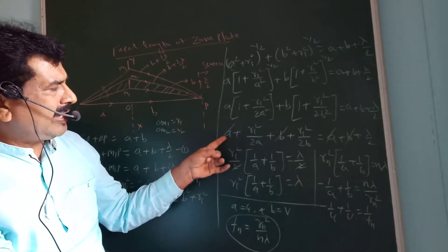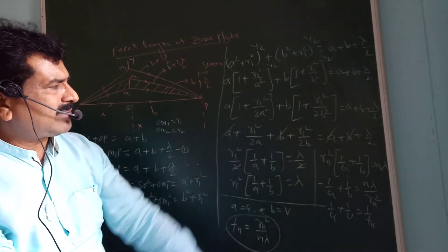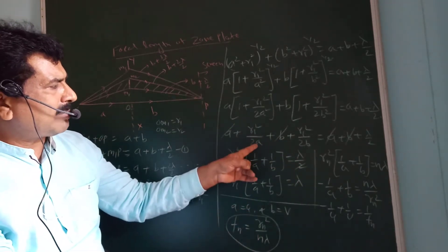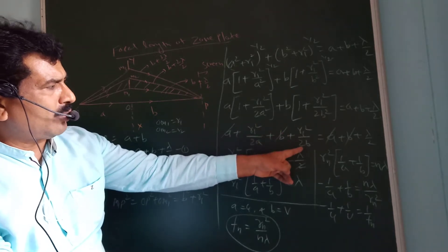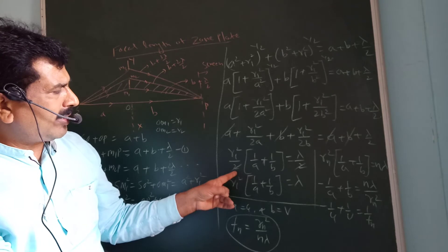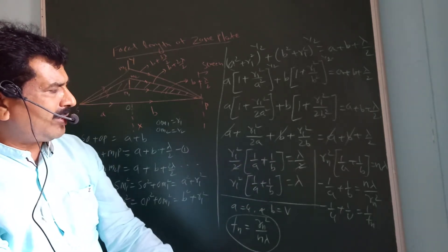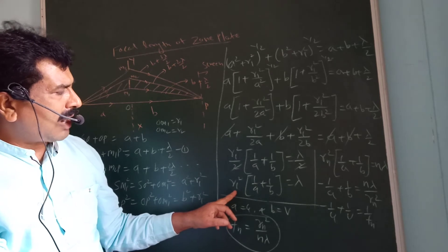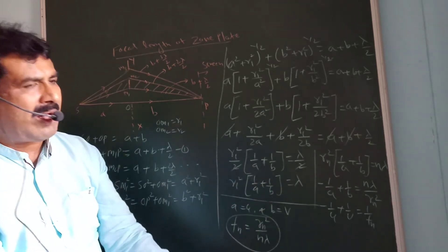Cancelling A and B from both sides, the remaining terms give: R1²/2A + R1²/2B = λ/2. Taking R1²/2 as common: R1² × (1/A + 1/B) = λ.